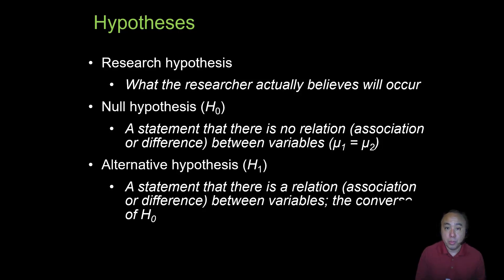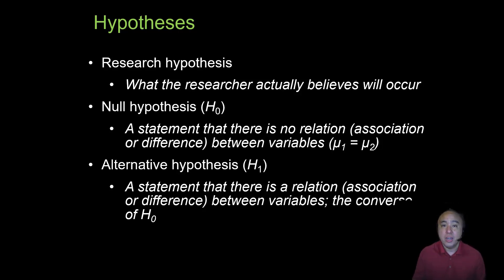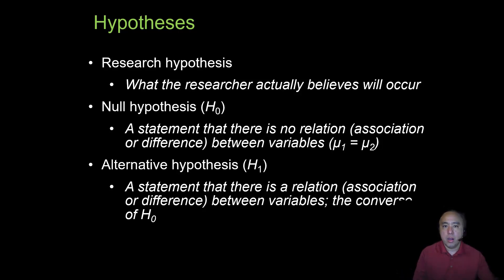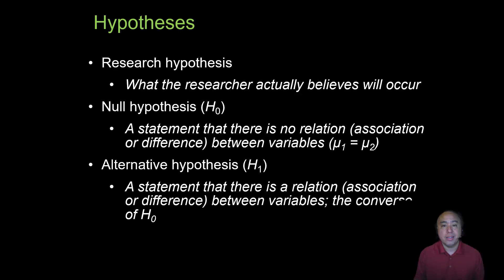There are two specific types of hypothesis. The most important is the null hypothesis — the word null means none or nothing — so it is a statement that there is no relationship between variables, no association between BMI and heart rate, or no difference in mile times between shoe A and shoe B.